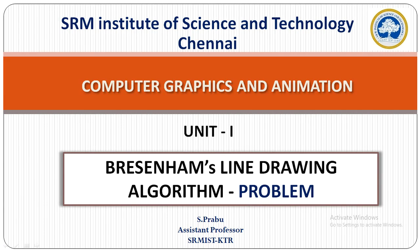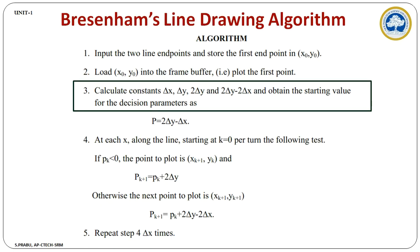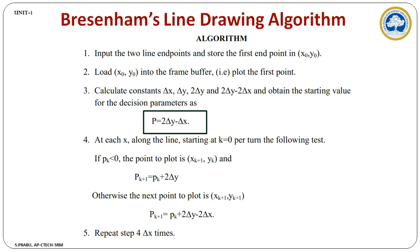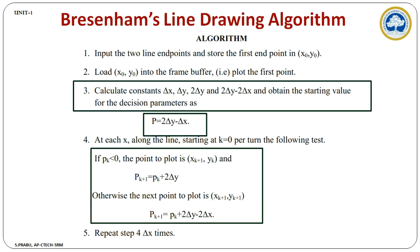Hello students. In this video, I am going to teach how to draw a straight line using Bresenham's line drawing algorithm. In the previous video, we already derived the equations involved in this algorithm. In this algorithm, there are three important parts: finding the constant value, finding the initial decision parameter, and predicting the next pixel values. Using this, we can easily find the intermediate pixels of the straight line.